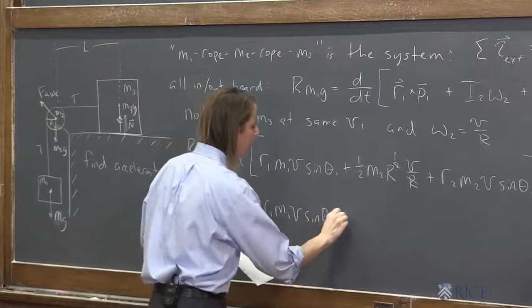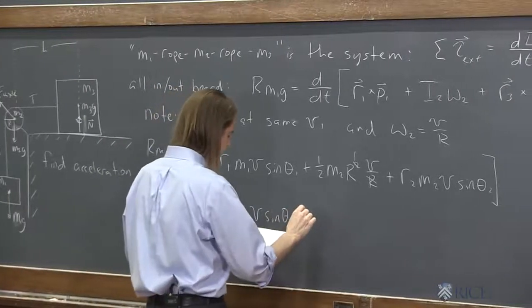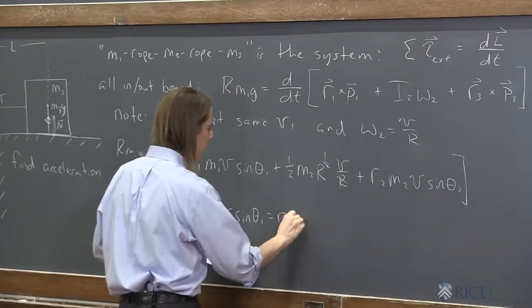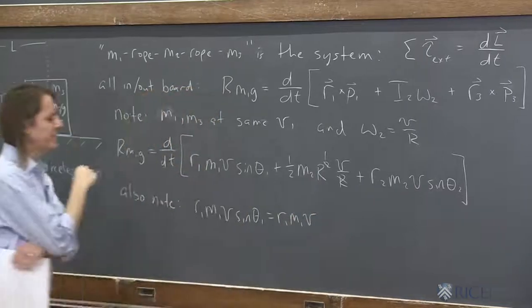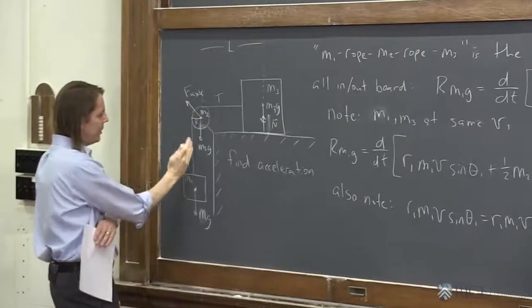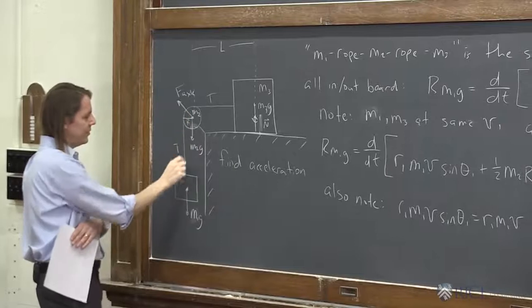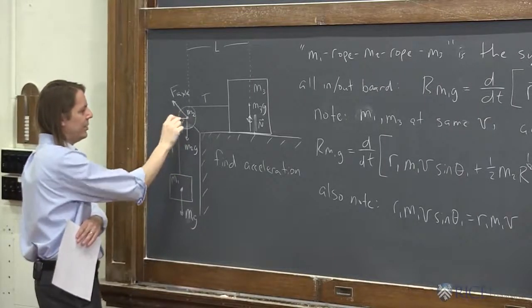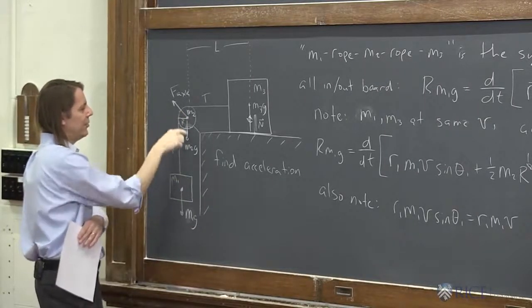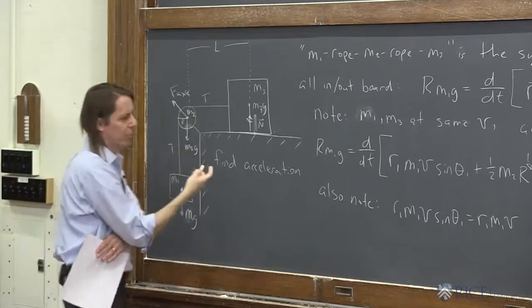Equals R1 M1 V. And what is sine theta 1? If I had that triangle drawn nicely here, you can basically see it. There's R1, there's theta, there's big R. The sine is opposite over hypotenuse, big R over R1.